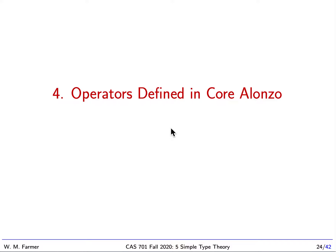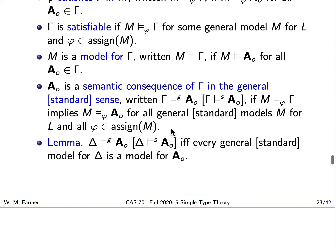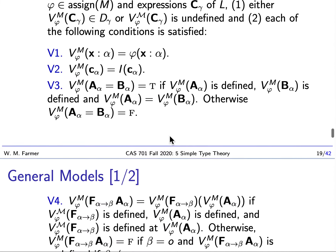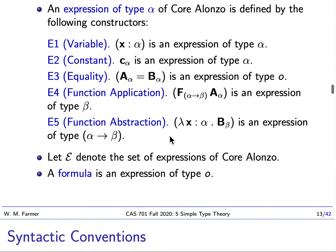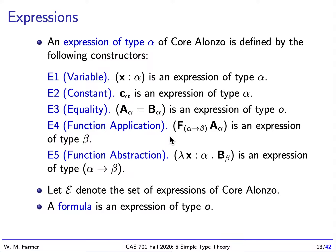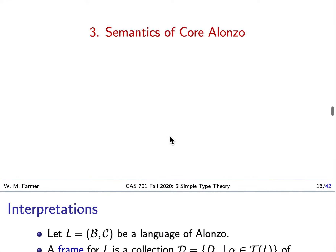We're going to talk about some operators that can be defined in core Alonzo. Let me remind you that if we go back and look at the different kinds of expressions we have in core Alonzo, we have only five kinds of expressions: variables, constants, equalities, function applications, and function abstractions. It seems like a very meager logic we have, but it's actually very powerful. We can define many, many different notations and concepts very directly using these five kinds of expressions. And that's what we're going to do now.